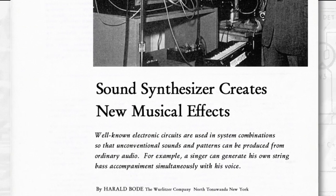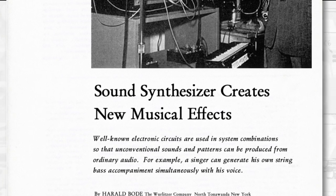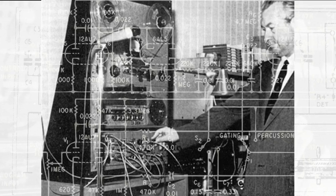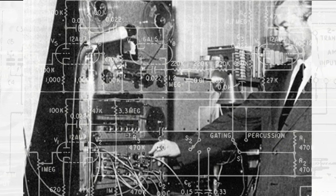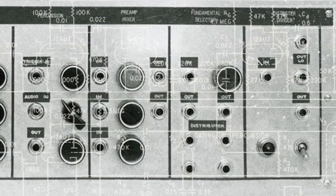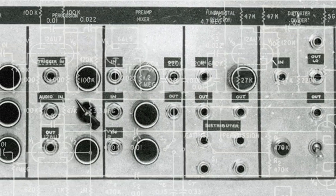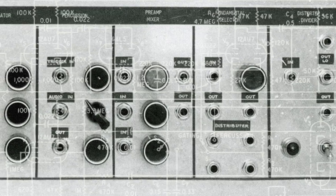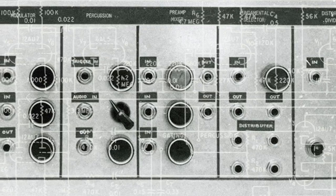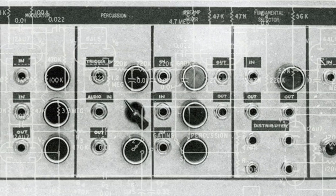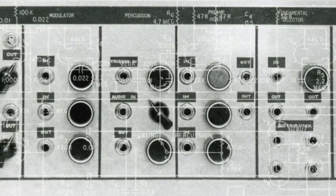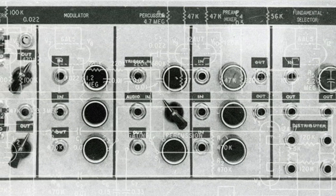In 1961, an article written by longtime electronic music instrument creator Harold Boda was published in Electronics magazine. This article was about a device that Boda was working on called a sound synthesizer. In the article, he makes statements like: application of a subsonic frequency to one input will periodically modulate a frequency applied to the other, and application of a percussive envelope to one input simultaneously with a steady tone at the other input will result in a percussive type output that will have the characteristics of the steady tone modulated by the percussive envelope.